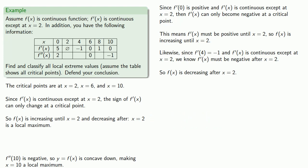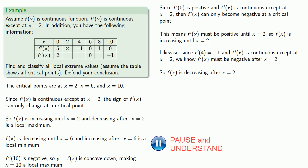We also know that f(x) is decreasing until x equals 6 and increasing after, so x equals 6 is a local minimum value. Since there are no other critical points, there are no other extreme values.